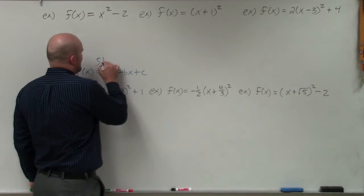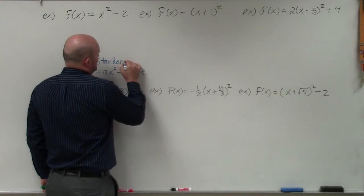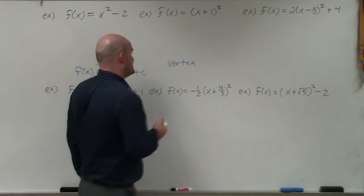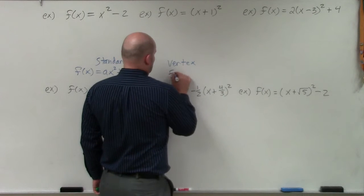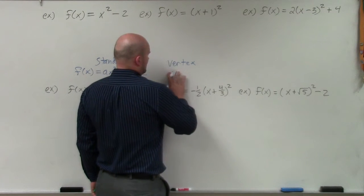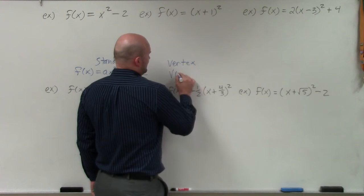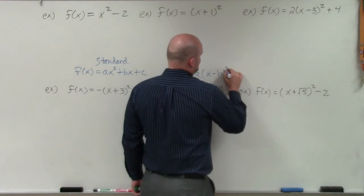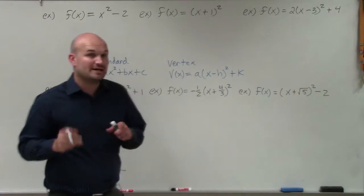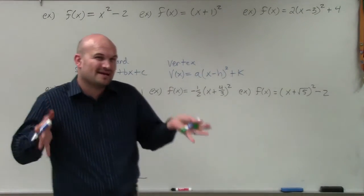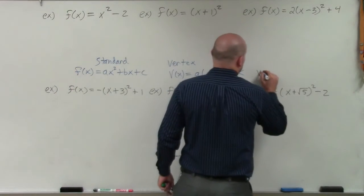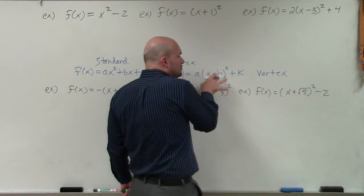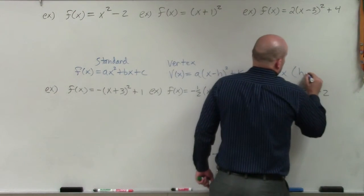Vertex form takes its name because it actually gives us the vertex. We'll call this v of x, and it's going to equal a times x minus h squared plus k. In another video, I'll show you how to go from standard form to vertex form, but for right now we're just focused on what vertex form is. What's nice about vertex form is it tells you exactly what the vertex is — the vertex is going to be the value of h comma k.